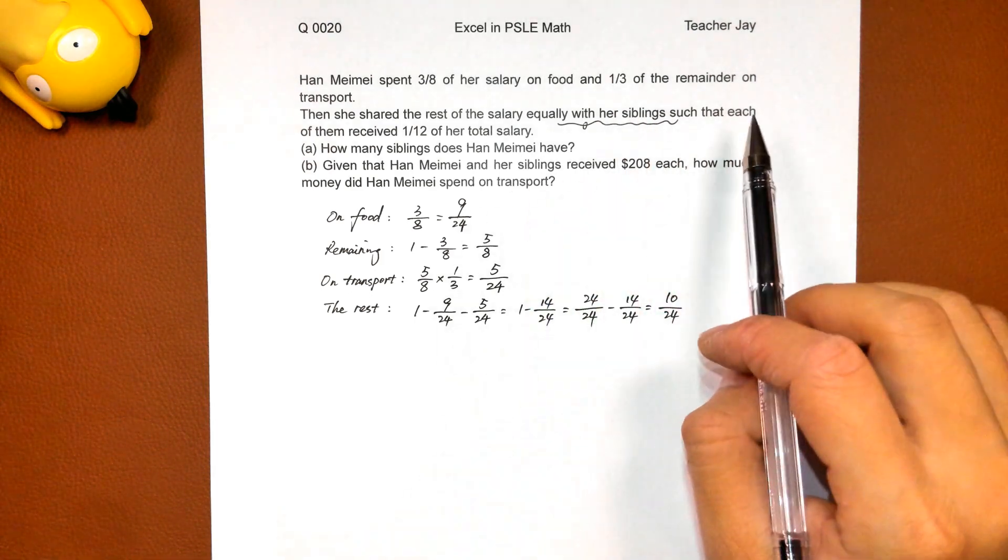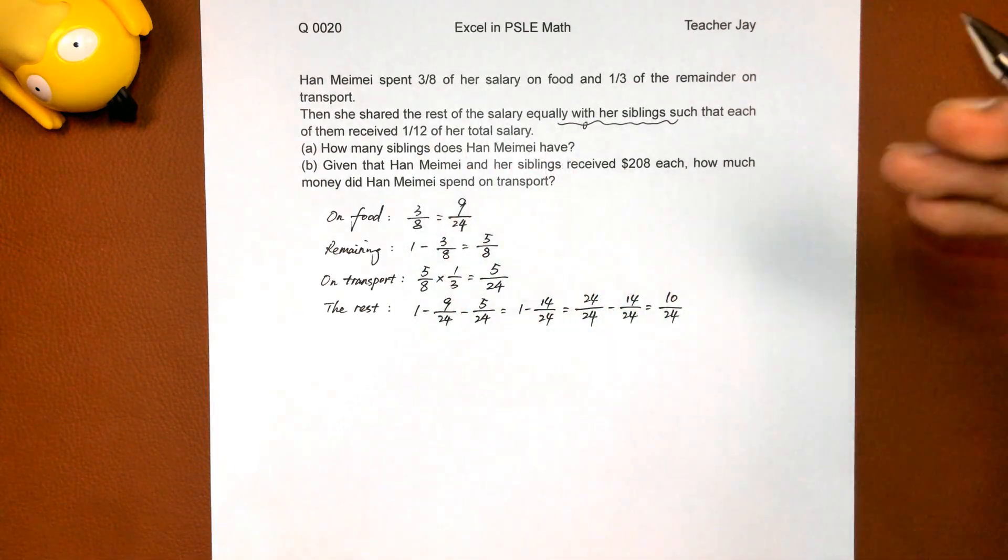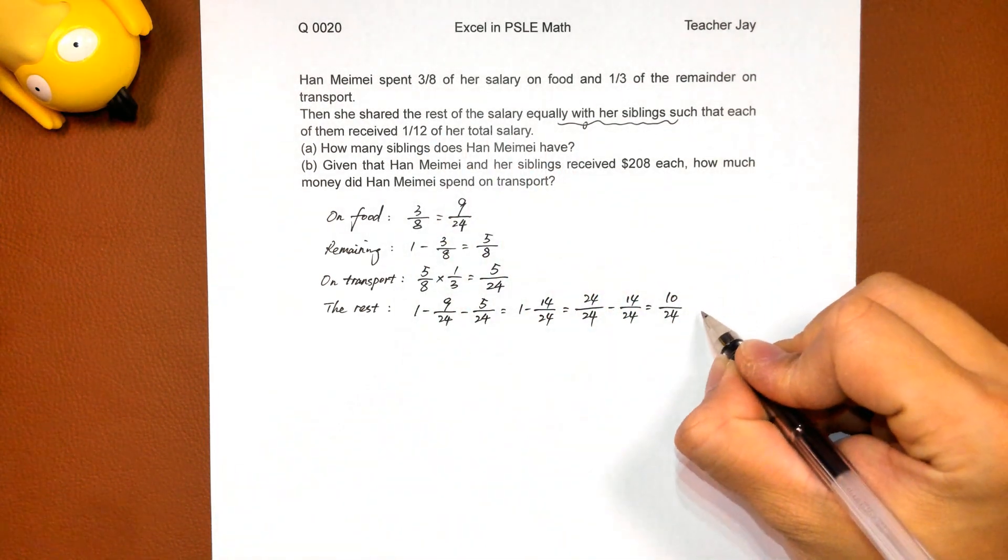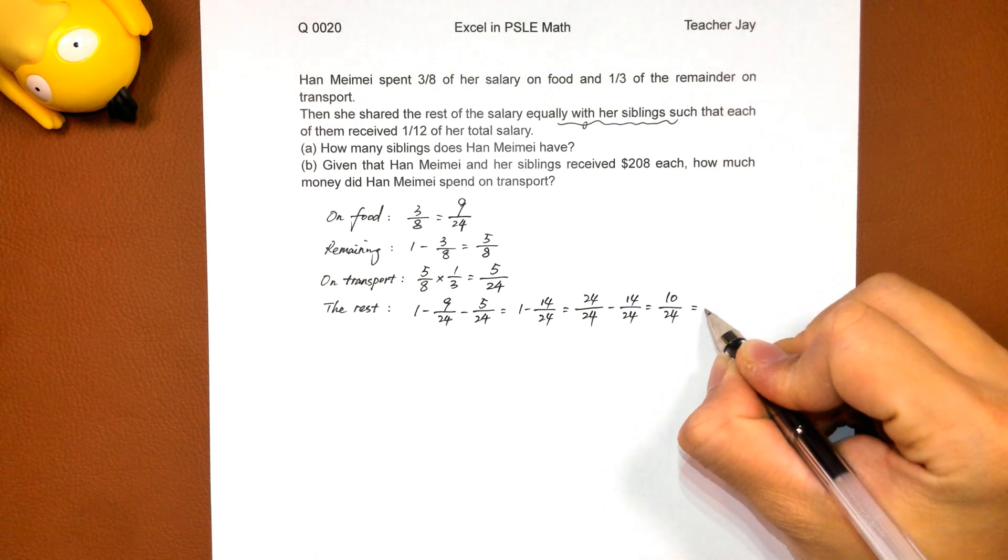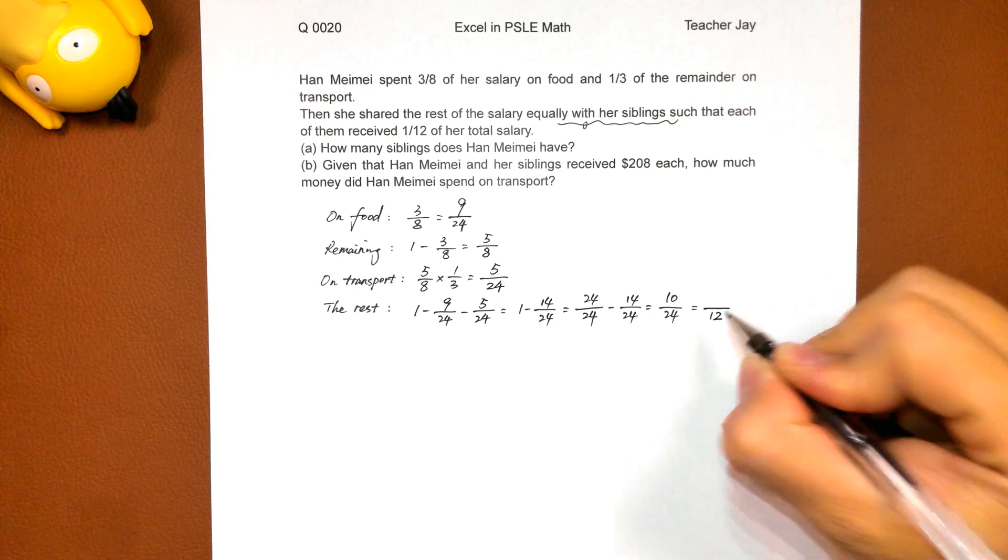So each of them receive one over twelve, one twelfth of her total salary. So we must change the denominator to twelve. Five over twelve.